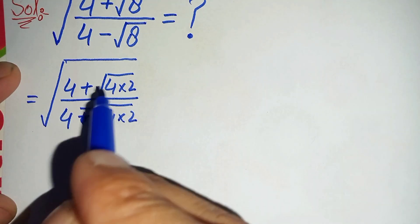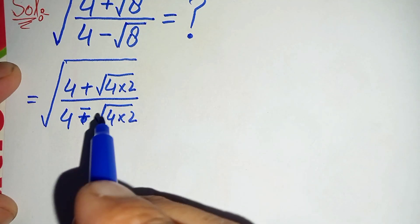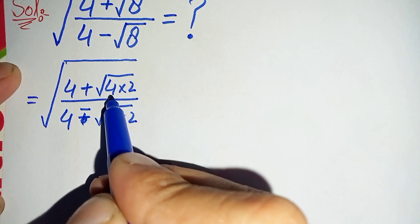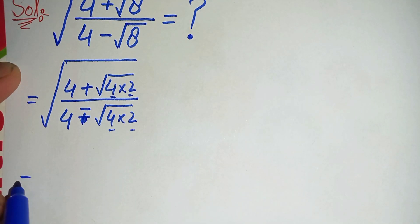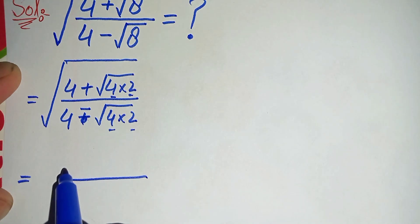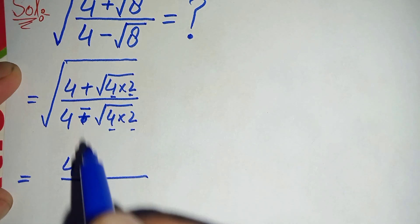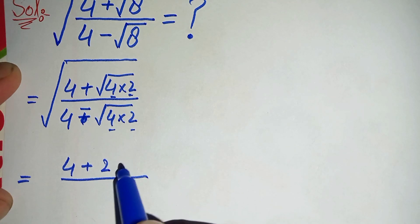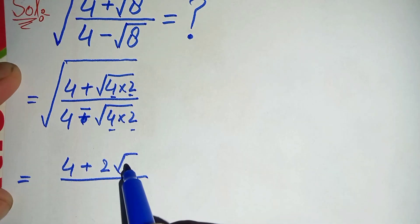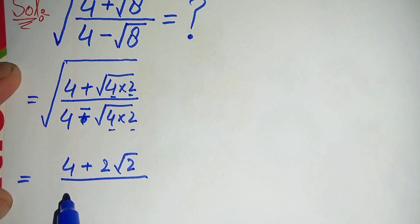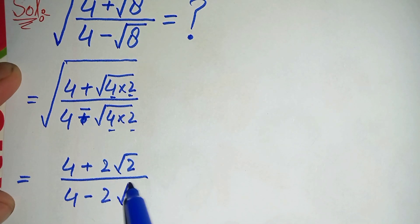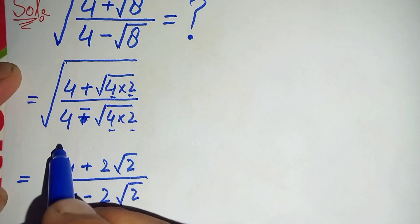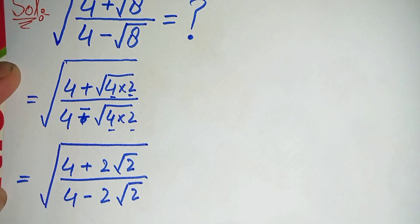Now, in the numerator and denominator, we will use a square root math property and split the square root over 4. This will become: 4 plus square root of 4 is 2, times square root of 2. The same change occurs in the denominator: 4 minus square root of 4 is 2, times square root of 2 — all under the square root.